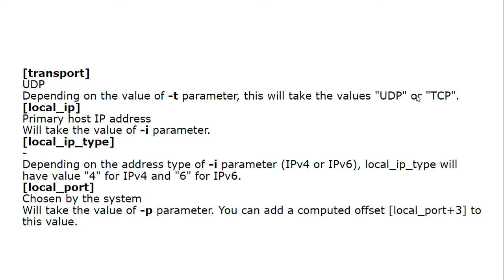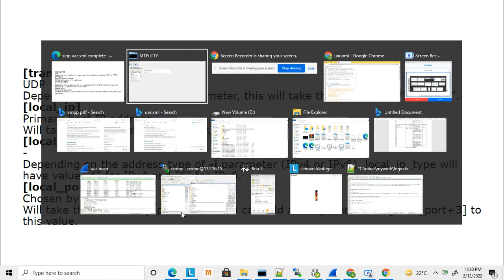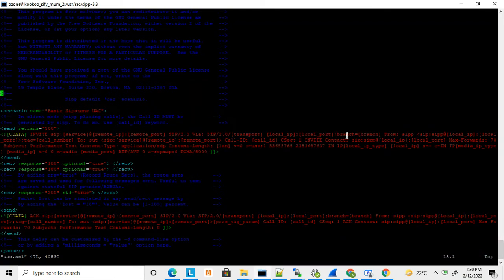For local IP, use the -i parameter and pass the value with -i — this will fill the local IP variable. Local IP type is selected automatically as IPv4 or IPv6 based on the value you send. For local port, use the -p parameter and fill it with the value. There are a few more parameters — values like branch and call-ID are filled by SIPp automatically by default, so SIPp auto-generates these values.